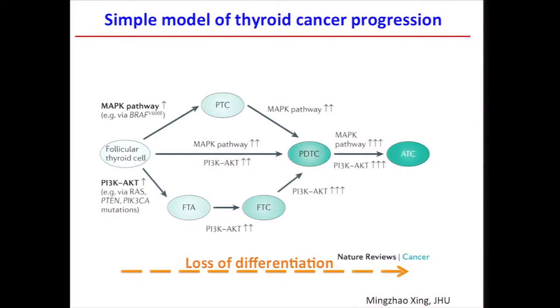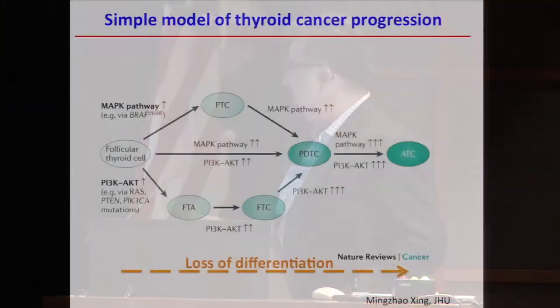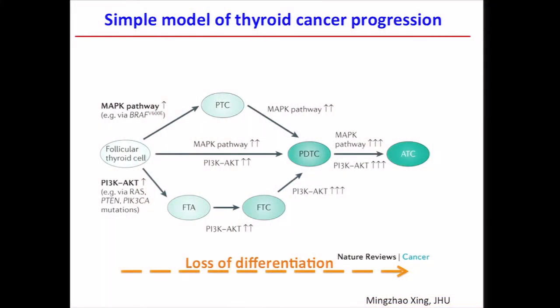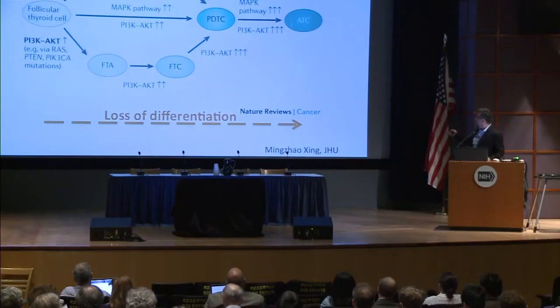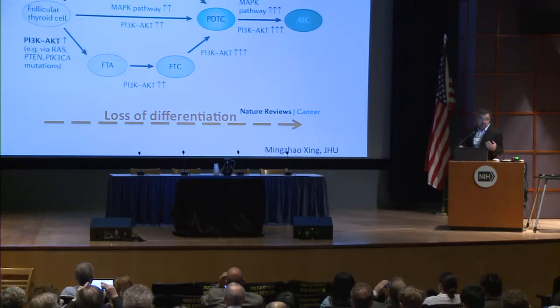We start with the normal follicular cell and progress to well-differentiated tumors — either papillary or follicular tumors, follicular adenoma and follicular carcinoma. Most tumors stop here, but rarely they evolve into poorly differentiated or anaplastic carcinoma. The key point is that there's a progressive loss of differentiation, which is very important for thyroid cancer and is the foundation of our classification.